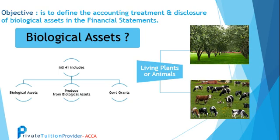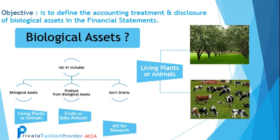Let's have a look in a little more detail. Biological assets are living plants or animals. Produce from biological assets includes fruits, vegetables, or baby animals. Government grants are the aids provided by the government for research purposes.